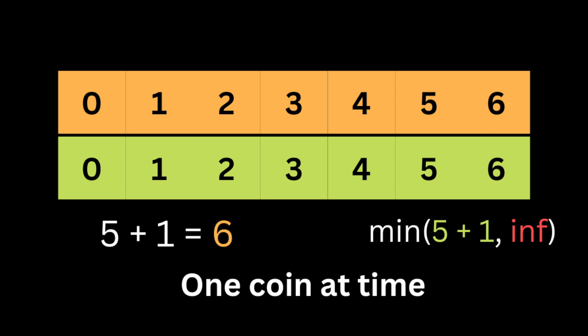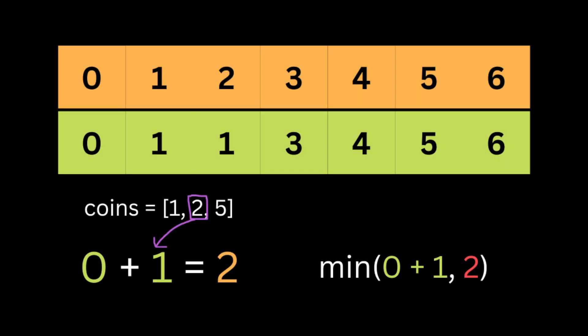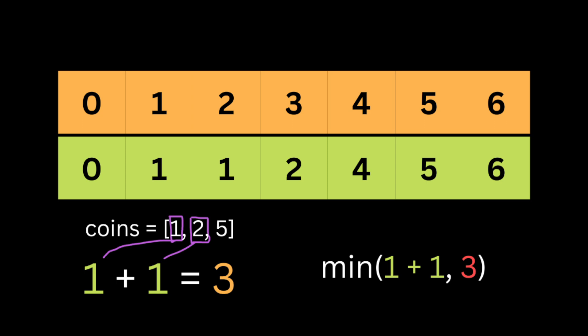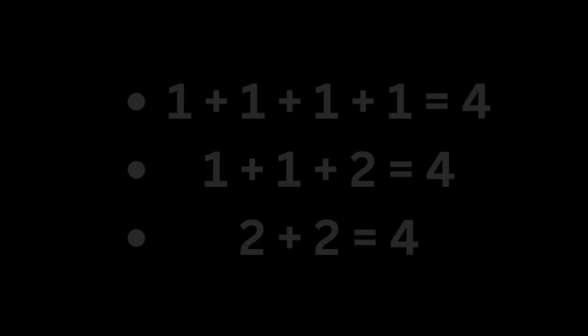Now we consider the second coin, value two, building on what we already found using coin one. For amount two: from amount zero we need just one coin of value two, so zero plus one equals one coin — we replace the previous value of two with one. For amount three: from amount one we add one coin of value two, so we need one coin of value one plus one coin of value two — we replace three with two.